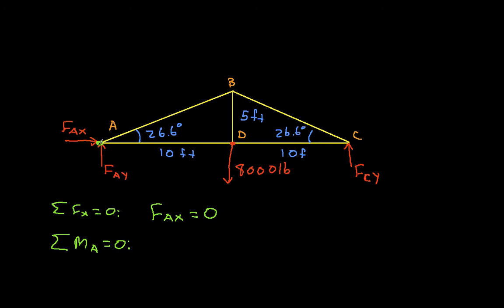So computing moments about A, well, this 8,000 pound weight is going to have a moment arm of 10 feet about A. So I've got 8,000 pounds times 10 feet, and that is negative because it's clockwise, plus FCY is going to have a moment arm of 20 feet, and this has to be equal to zero. And so I can solve this for FCY, and I'll find that FCY is equal to 4,000 pounds.